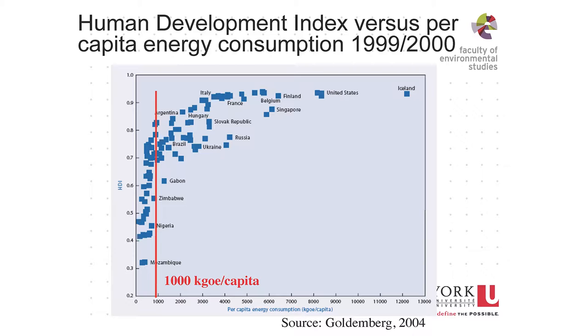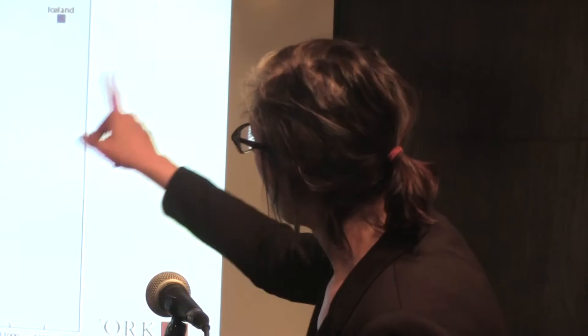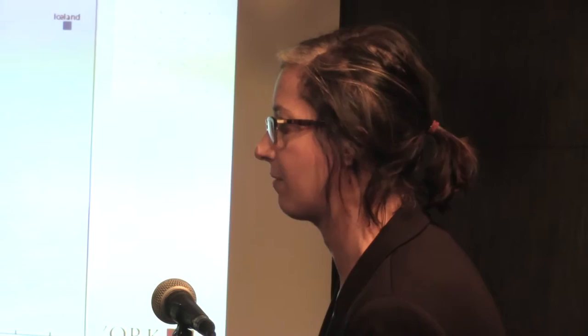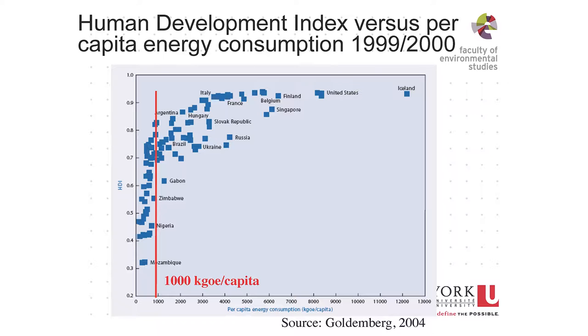This graph, prepared by Jose Goldenberg, shows the human development index compared to per capita energy consumption. There's a sharp rise in the human development index at about 1,000 kilograms of oil equivalent — he would consider that a threshold of well-being. Beyond that threshold, we're consuming lots of energy based on policies, infrastructures, and consumption patterns. You can see that the United States — and Canada is right there too — are far to the right on per capita energy consumption.